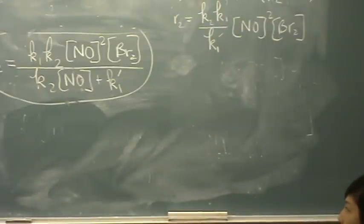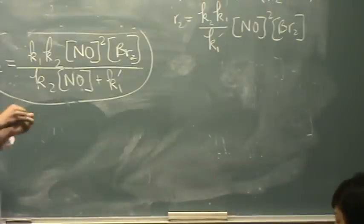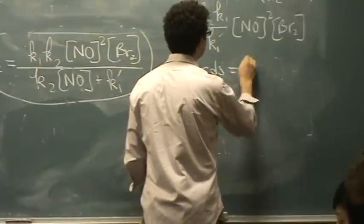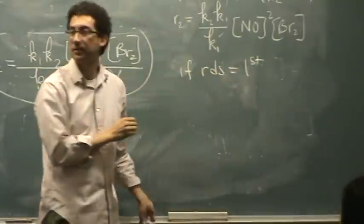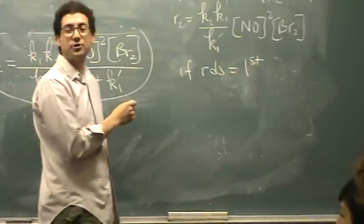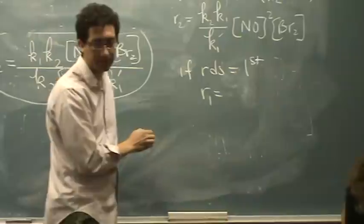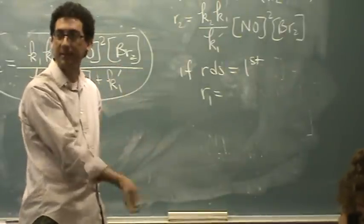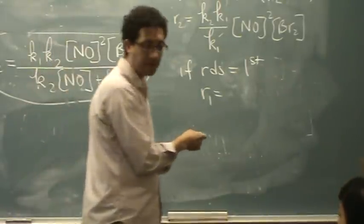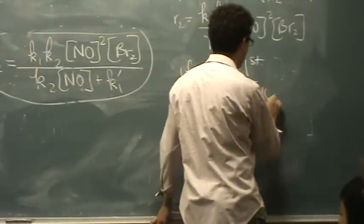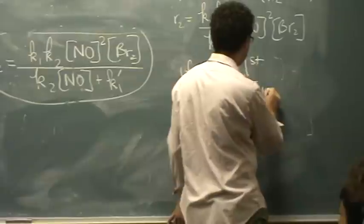If later it shows up it's not the slow step, that doesn't matter. Maybe I can do another illustration for you. If RDS is the first step, we didn't do this in class, but that would be rate one equals K1 NO BR2.